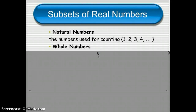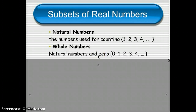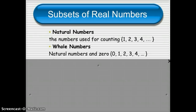Another type of numbers that you've dealt with for a very long time are called whole numbers. Whole numbers are very similar to natural numbers — they include all the natural numbers. The only difference is that the whole numbers also include zero. So 1, 2, 3, 4, but also zero. Those are called whole numbers.